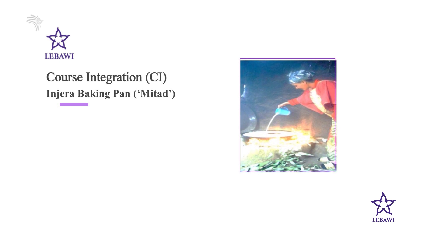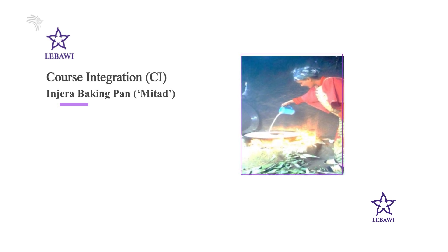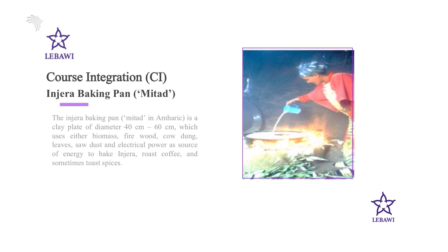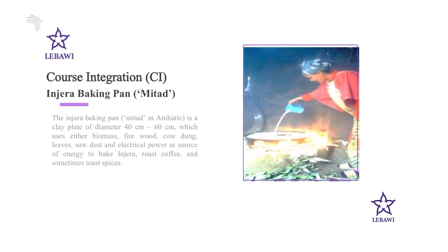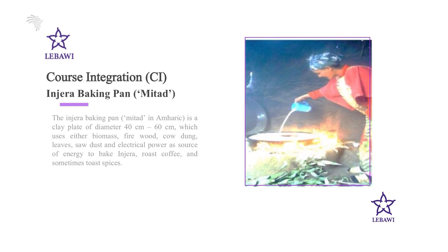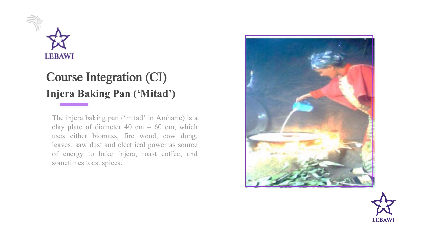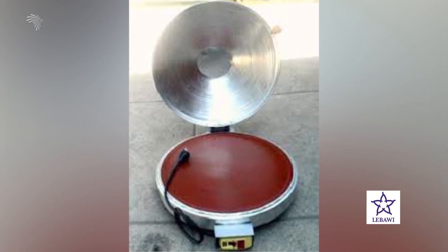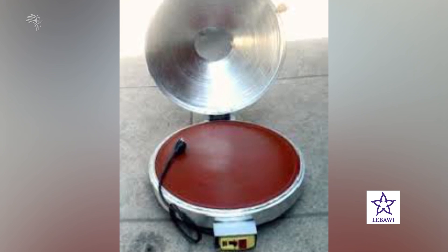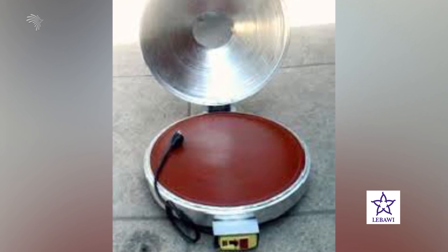Now let's see how the concepts we have discussed could be integrated to the process of injera baking. The injera baking pan, or mitad in Amharic, is a clay plate of diameter 40 to 60 cm, which uses either biomass, firewood, charcoal, leaves, sawdust, or electrical power as a source of energy to bake injera, roast coffee, and sometimes toast spices. Just like light bulbs and other appliances mentioned earlier, the electric injera mitad uses the heating effect of electric current for the baking process.